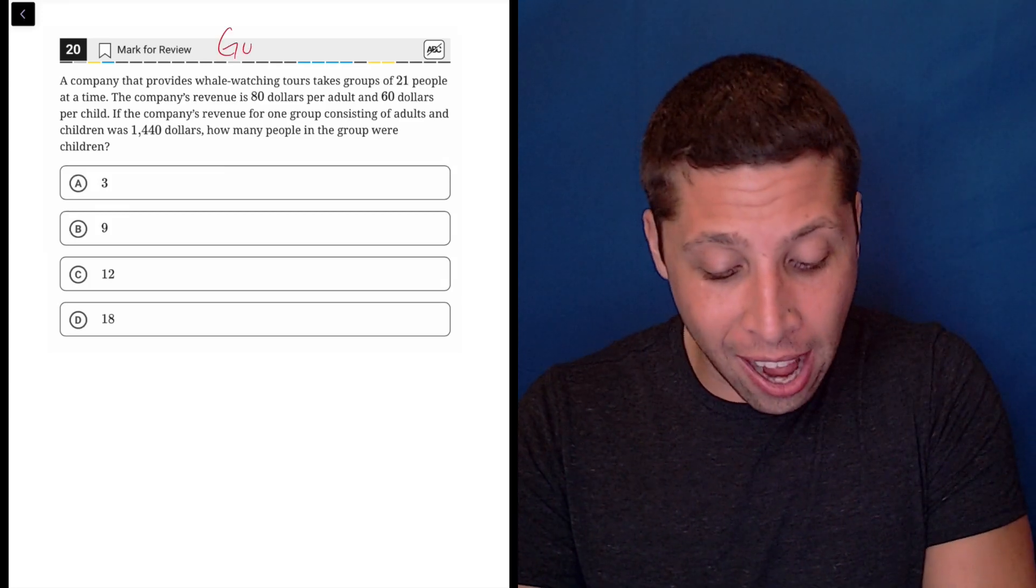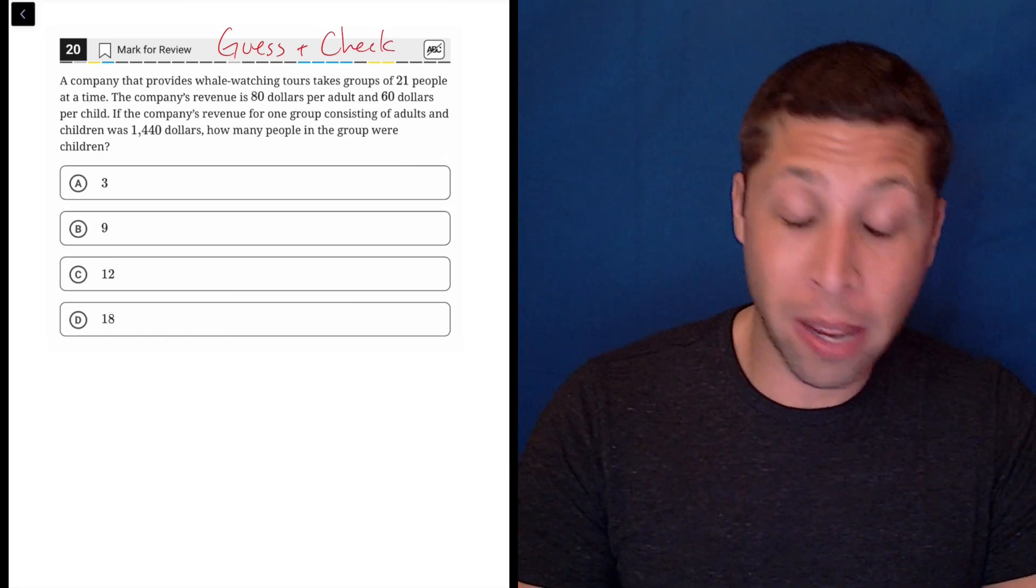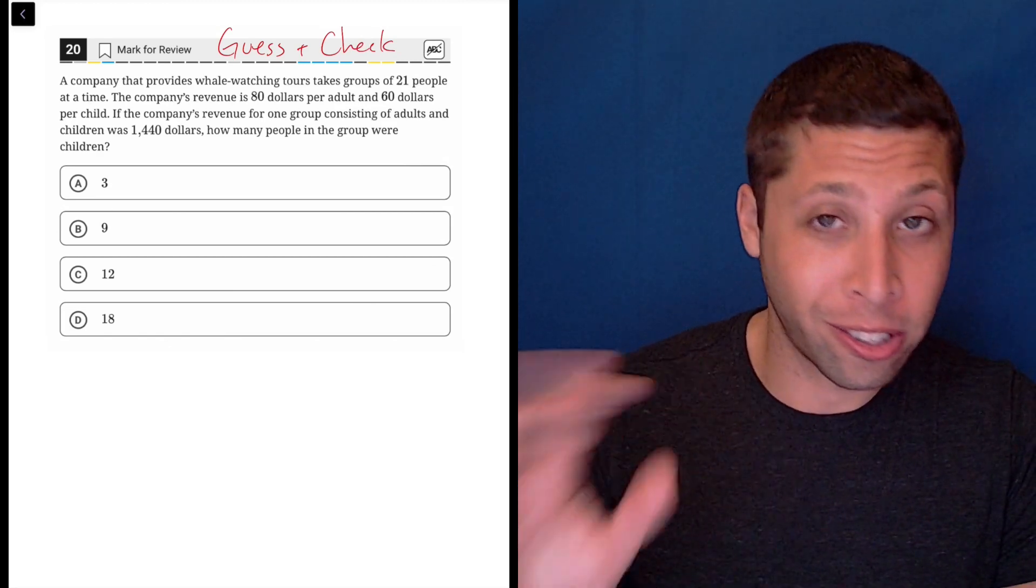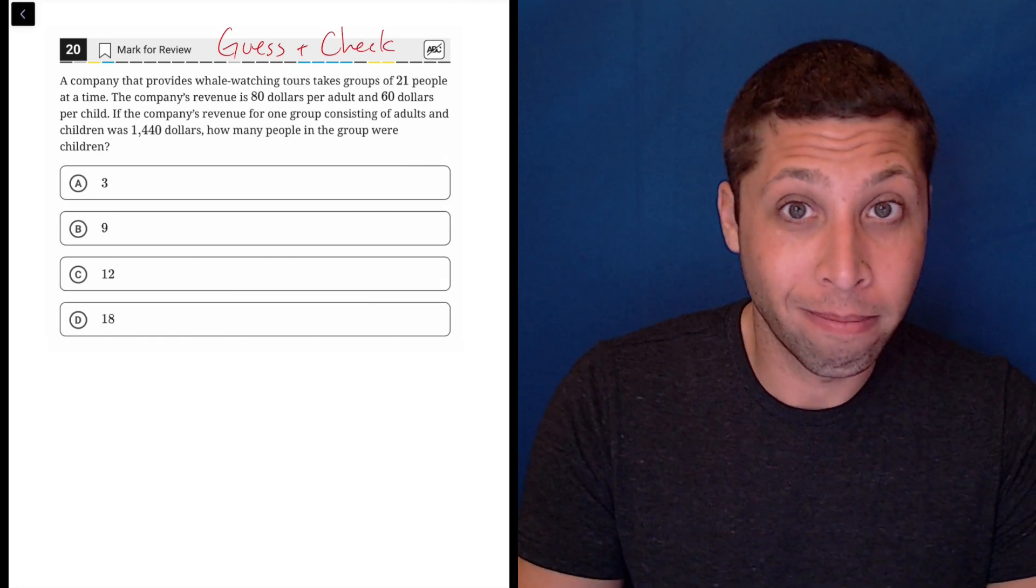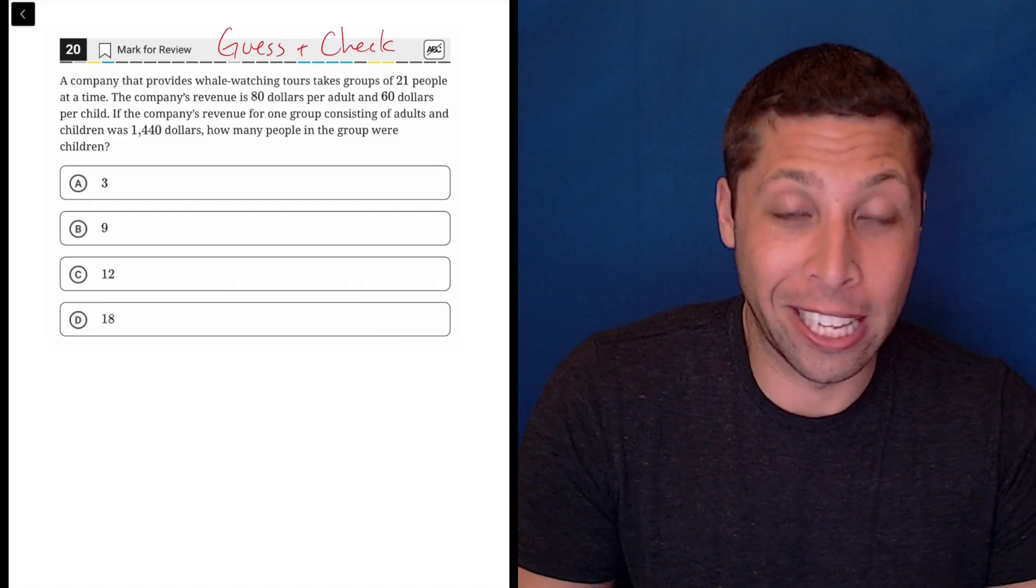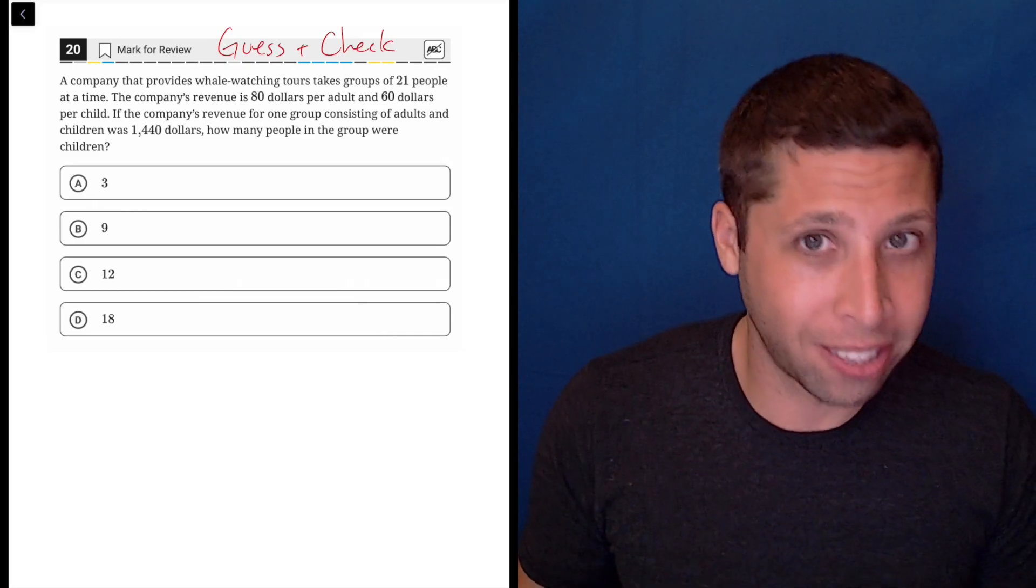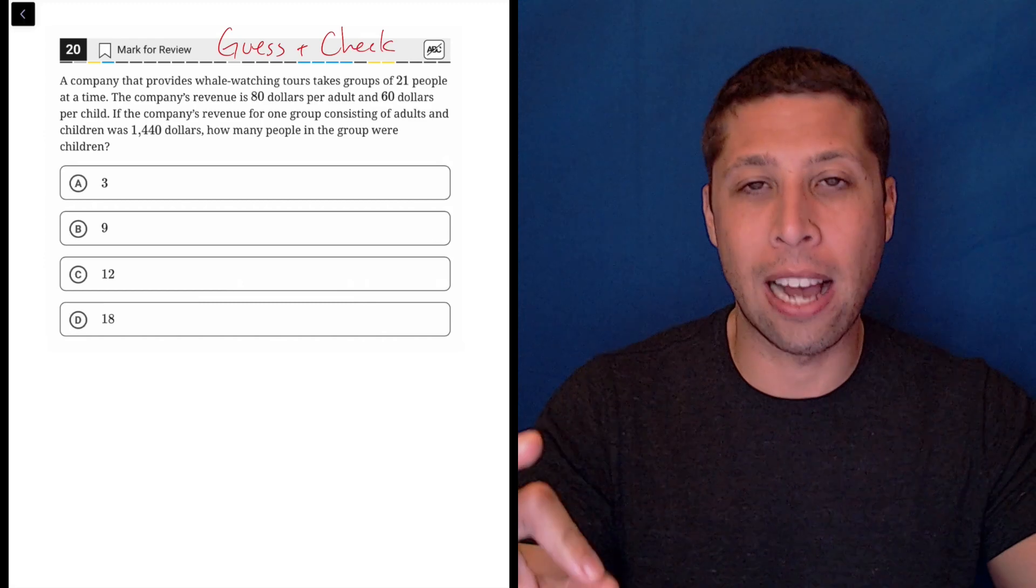Here's a question that to me is an obvious guess and check. Your math teacher might make you do something like this with equations and solving a system, but why? We don't have to. We have four answer choices, it can only be one of those four, and the story is kind of confusing. There's a lot of stuff going on. What guess and check lets us do is just focus on one piece at a time.